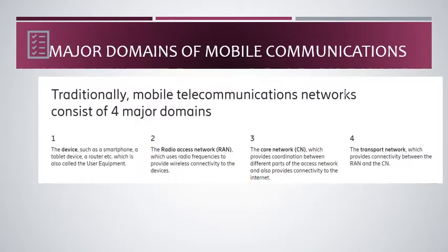In general, telecom mobile communications are split into three domains. First is the mobile or user equipment — devices such as smartphones, tablets, etc. The second part is the radio access network, which is the combination of BTS, BSC, Node B, and RNC. The third is the core network, connected to the RAN through a transport network, which can be either a microwave link or an optical network.